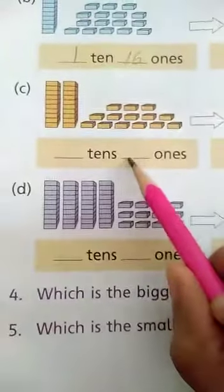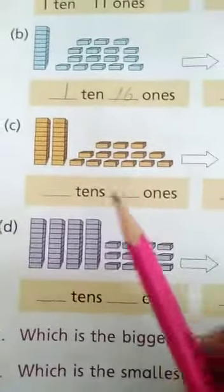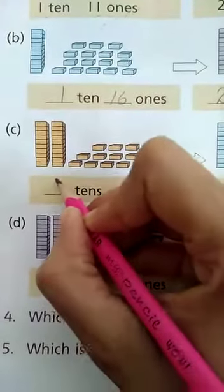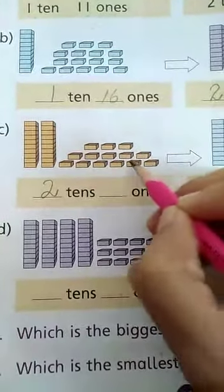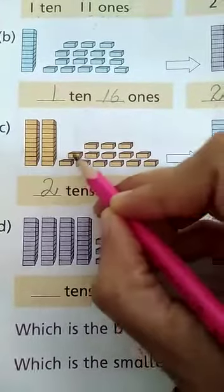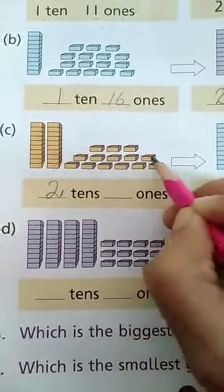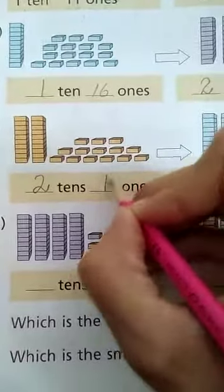Now we move on to question number C. Adil has 2 tens and 1, 2, 3, 4, 5, 6, 7, 8, 9, 10, 11, 12, 13, 14... 14 ones.